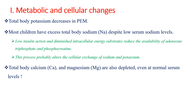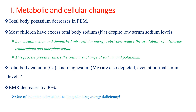Total body calcium and magnesium are also depleted even at normal serum levels. Basal metabolic rate is decreased by approximately 30%. This is one of the main adaptations to long-standing energy deficiency, because energy is used for basal metabolic rate and also for growth in children and to generate energy. So to adapt to long-standing energy deficiency, there is a decrement in basal metabolic rate as an adaptive mechanism to survive.